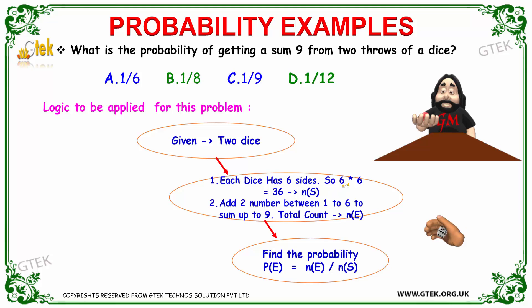This is the logic you should apply: each dice has six sides, so 6 × 6 equals 36 possibilities - that's the sample space. Add two numbers between 1 to 6 to sum up to get 9. The total count we need to identify is the number of possible events.